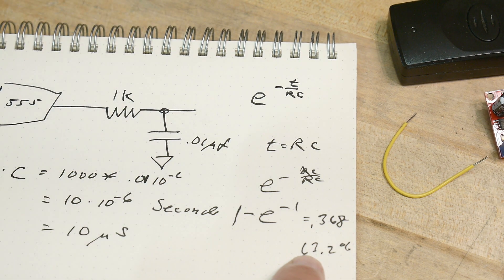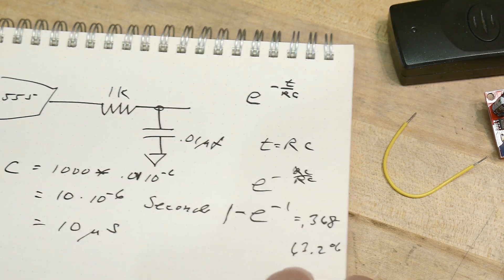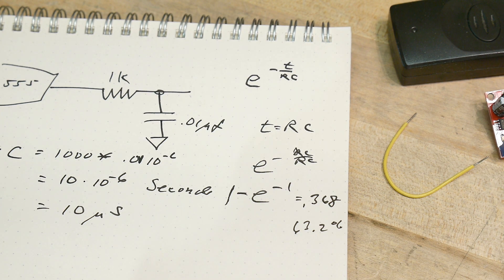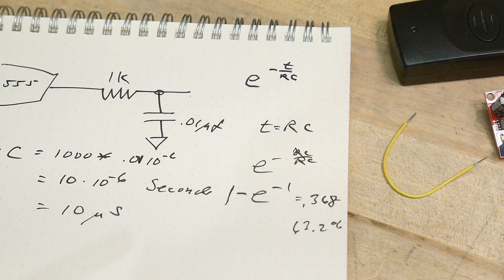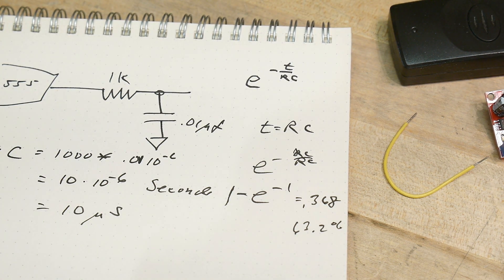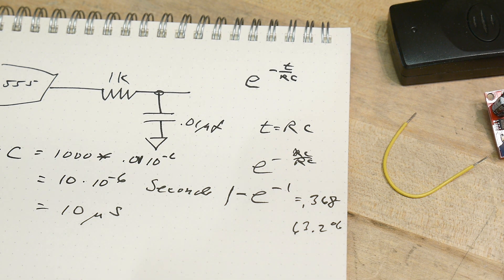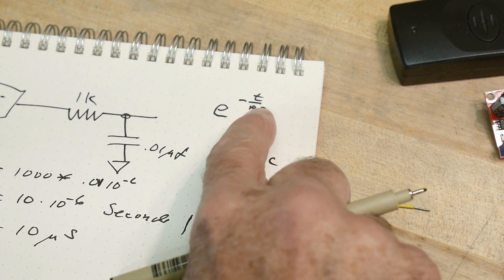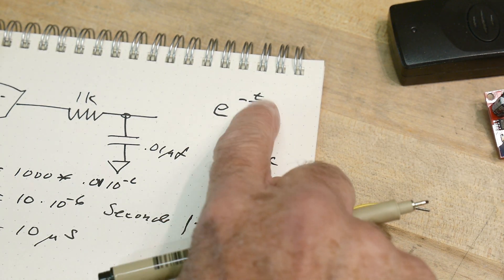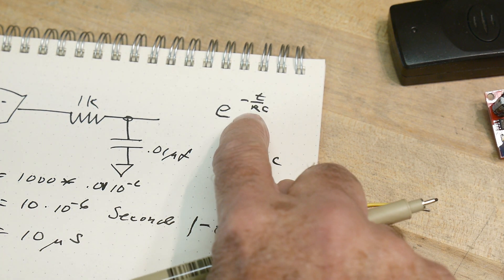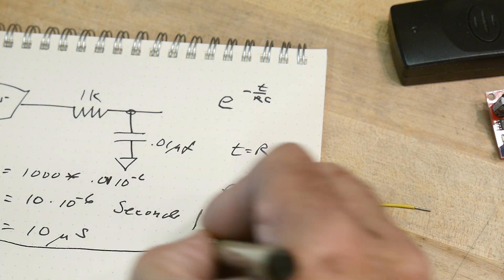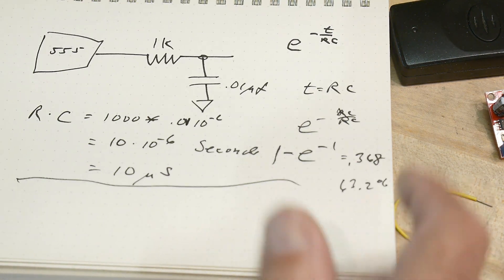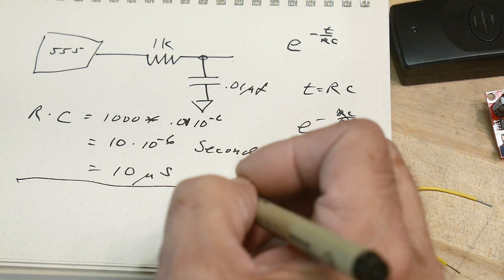Now you want to go a step further. If T is in seconds and RC needs to be in seconds for this equation to work, how can R times C equal seconds? What is R? Well, let's talk about C first. C is Q over V - capacitance is charge divided by voltage. You also know that voltage equals current times resistance. So R is just voltage divided by current.